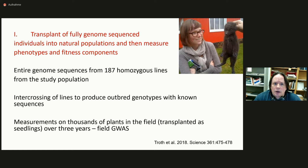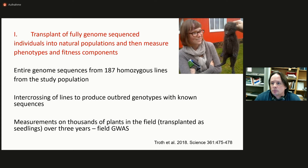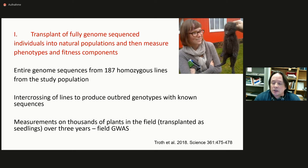The first methodology was a transplant study, what I'll call a field genome-wide association study. The lead author was Ashley Droth. The method here is we start with a characterized population in the greenhouse — we have been doing work on this population for over 30 years. We had formed a large collection of homozygous lines extracted from the population, fully genome-sequenced those, then intercrossed them to produce thousands of plants with known genotype. Those are the actual plants under study in the field, transplanted out as seedlings to match the native vegetation in age and stage. We then monitor them for the development of traits and fitness components.